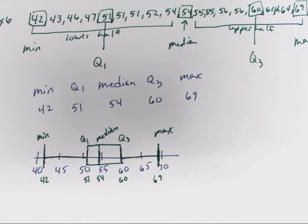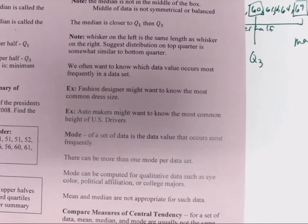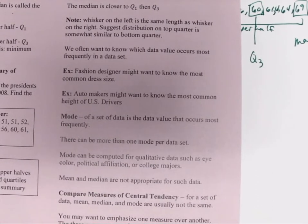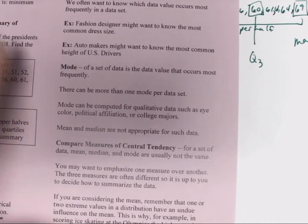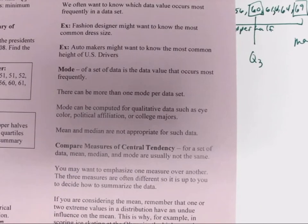We often want to know which data value occurs most frequently in a data set. For example, a fashion designer might want to know the most common dress size, or automakers might want to know the most common height of US drivers. That's called the mode of a set of data, and it's the data value that occurs most frequently. There can be more than one mode per data set. The mode can be computed for qualitative data such as eye color, political affiliation, or college majors. The mean and the median are not appropriate for that kind of data.